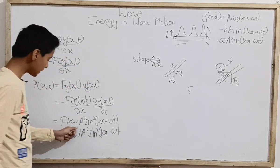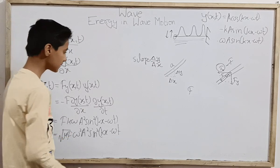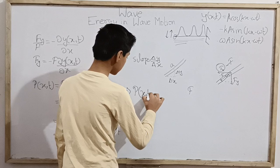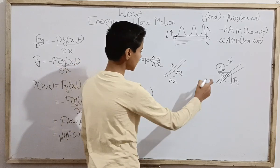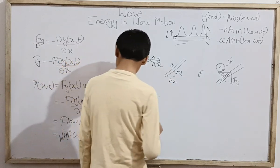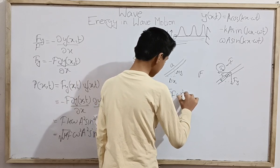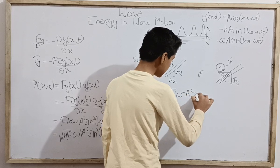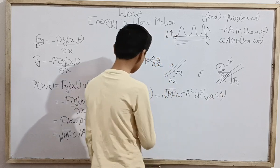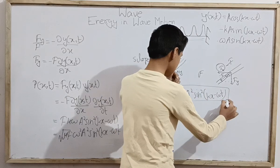So the instantaneous power at position x and time t is: P(x,t) = √(μF) × ω² × A² × sin²(kx − ωt). This is our instantaneous power formula.